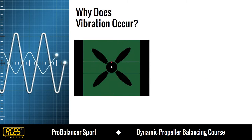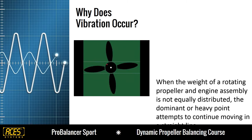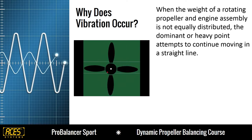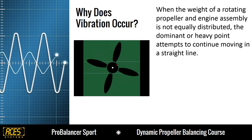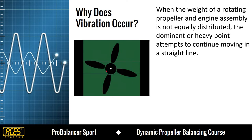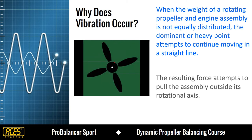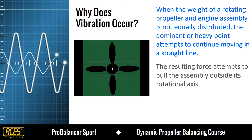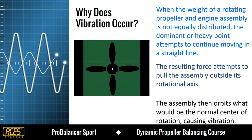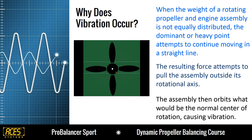Why does vibration occur? It occurs when the weight of a rotating propeller and engine assembly is not equally distributed. Vibration occurs when the dominant or heavy point attempts to continue moving in a straight line. The resulting force attempts to pull the assembly outside its rotational axis, and then the assembly orbits what would be the normal center of rotation, causing vibration.